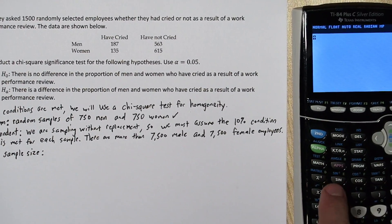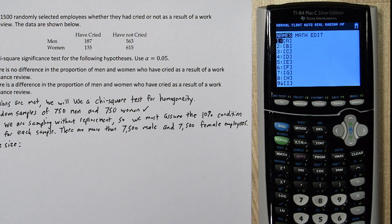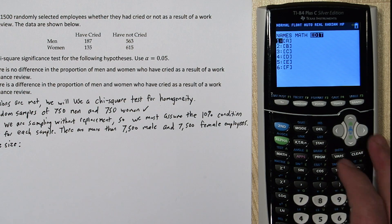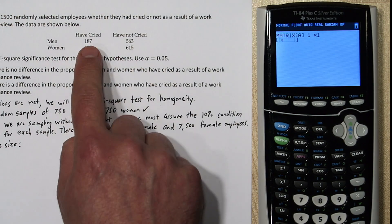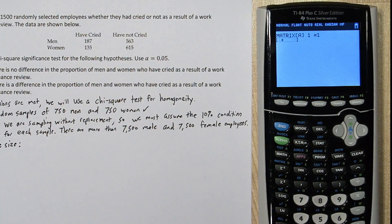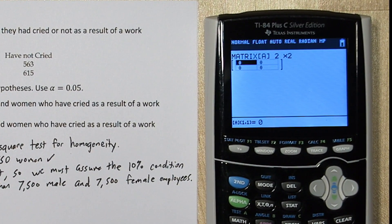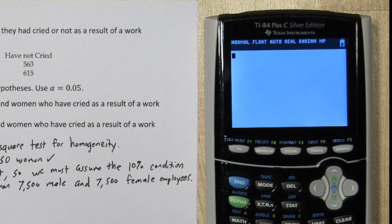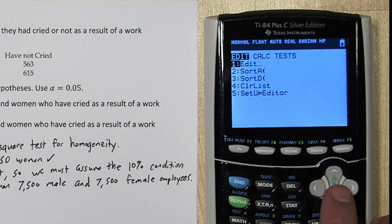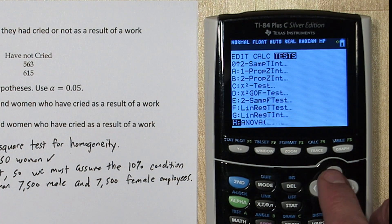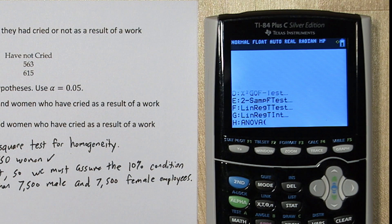Press 2nd and this x to the negative 1 button to access the matrix menu. Go over to edit, so we can edit matrix A. And our table is a 2 by 2 table, so I'm going to put 2 by 2. And input the data. Now if you press 2nd quit, and push the stat button, go over to test and go all the way down to chi-square test.